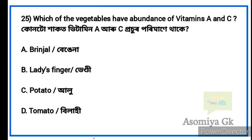Next question: Which vegetable has evidence of both Vitamin A and Vitamin C? Option D: Tomato. Tomato contains both Vitamin A and Vitamin C.